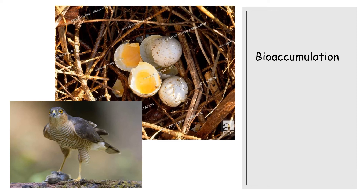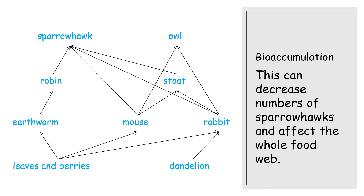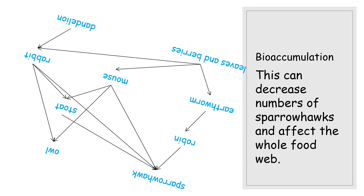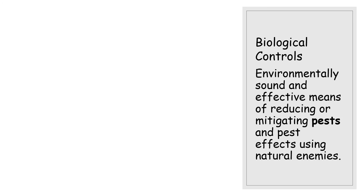This is referred to as bioaccumulation — the build-up of substances such as pesticides in an organism. The sparrowhawk is a genuine example: they developed high concentrations of DDT within their systems. They then laid eggs with very thin shells; when birds sat on them to incubate them, the eggs broke before hatching, leading to a decline in their population. Changing the numbers of any organism in a food web can have a massive impact, especially at the top of a food chain.